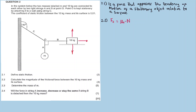Looking at the free body diagram for the 10 kg mass, we can see the normal force, static friction, tension, and gravitational force FG. The normal force is equal to the gravitational force in this case. So static friction equals mu-s times the normal force. Substituting: mu-s is 0.51, and the normal force equals mass times g, which is 10 times 9.8.